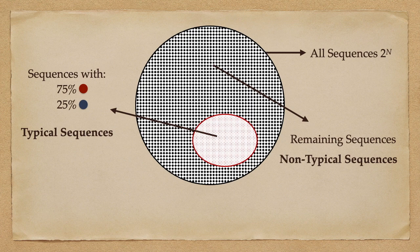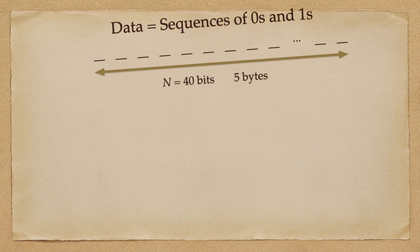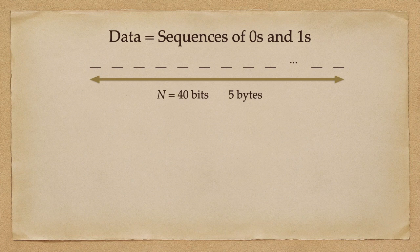Thus, as a consequence of the so-called asymptotic equipartition property, recall the example of all sequences of length 40 bits. Why is this property useful in our case? If n is sufficiently high, the sequences given by the source tend to be only typical sequences. So why should we reserve space to store the non-typical ones?